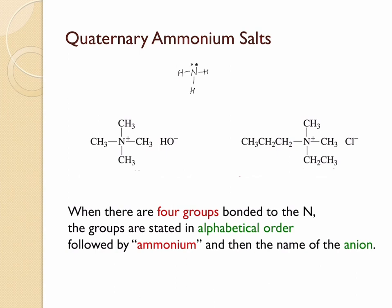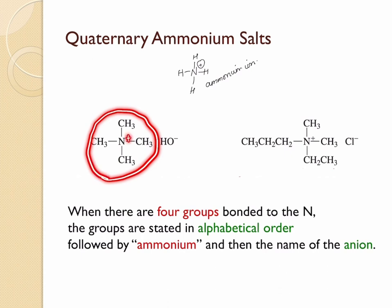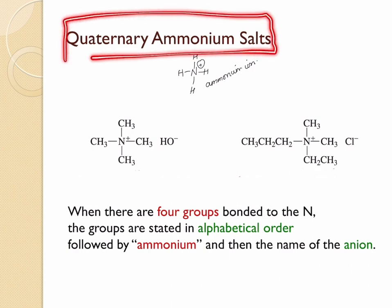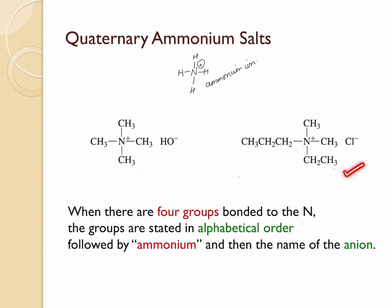Nitrogen can sometimes use its lone pair of electrons to form a bond with hydrogen or other atoms, and in that case it is called a quaternary ammonium ion. For example, if nitrogen uses its lone pair to bond with a hydrogen, it forms an ammonium ion. When nitrogen has four alkyl groups and a positive charge, it is a quaternary ammonium ion. Because of the positive charge, a counter ion coordinates with it to form quaternary ammonium salts.